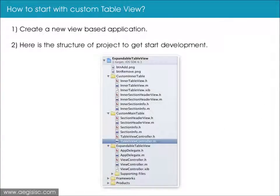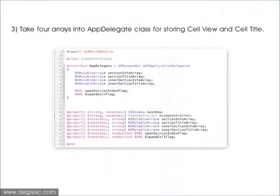Let us start with custom table view. First, create a new view-based application — here is the structure of the project to get started with development. Now take a look into the App Delegate class for storing cell view and cell title, like this.